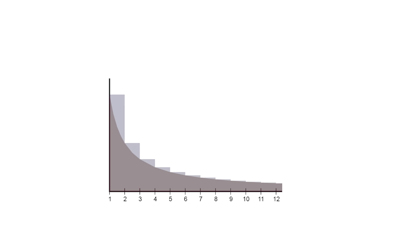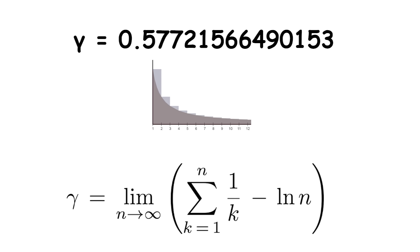Gamma is Euler's constant, or the Euler-Mascheroni constant. It is approximately equal to 0.5772, and this constant appears in various areas of mathematics, especially in number theory and analysis. It is defined as a limiting difference between the harmonic series and the natural logarithm. Euler's constant is not known to be rational or irrational, and its exact nature remains an open question in mathematics.